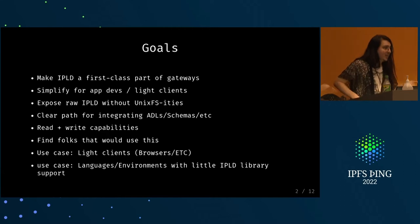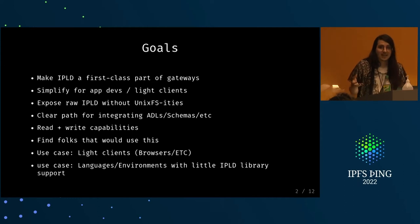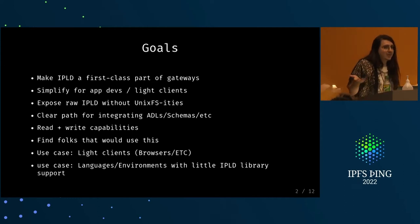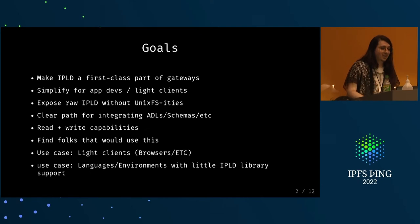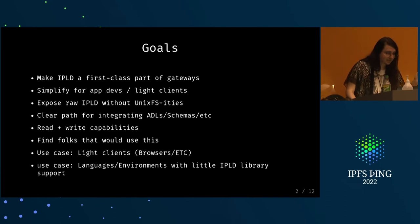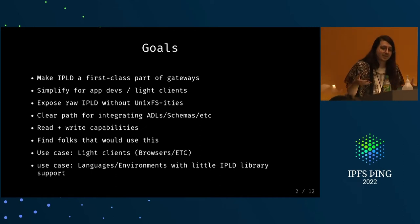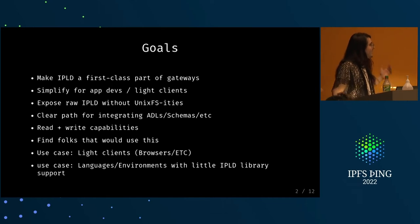It'd be nice if we could have similar UX for IPLD, where rather than embedding go-IPLD-prime in your application, you can have a lightweight way of interacting with IPLD that still does everything you want. It'd also be nice to expose the data we have in the ecosystem without all of the UNIXFS-isms, because right now you can get data out with a CID from the slash IPFS prefix, but there's a whole bunch of extra baggage there to account for how DAG-PB and UNIXFS work. So I also want to have a clear path for new developers to think about how they can integrate ADLs and schemas.